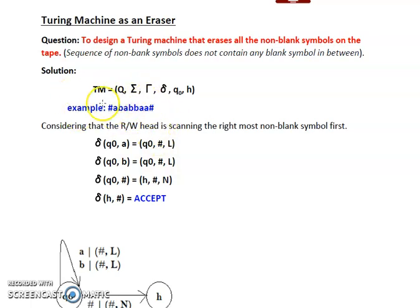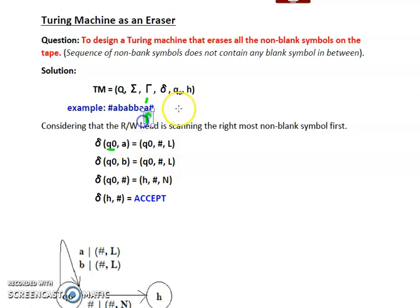Now let's dry run this using these transitions to verify the solution. Our head starts on the rightmost non-blank symbol A, and we are on state Q0. We read A, remain on Q0, replace A with hash, and move left. We are now on the next A. Again reading A in state Q0, A is replaced by hash and we move left.